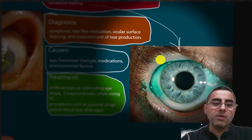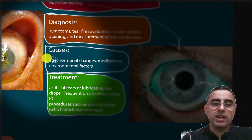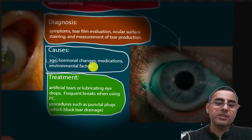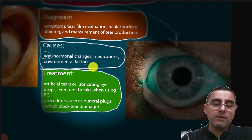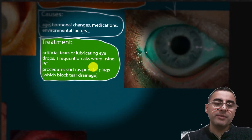The most common cause of dry eye is age — it is common in older patients. Other causes include hormonal changes, medications, and certain environments. Treatments include artificial tears or lubricating eye drops, and taking frequent breaks when using a computer or any kind of screen.